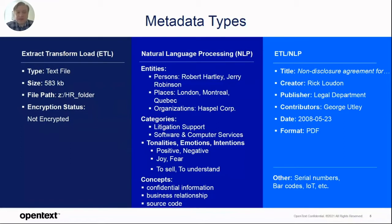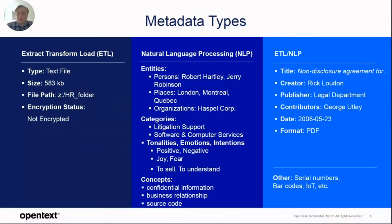Here we're talking about named entities such as persons, places, organizations, product names, drug names, and so on. Classifications — categories such as litigation support, software, or computer services — whatever classification applies to a document, whether it's a document type or a list of topics found within the document. Then we're talking about tonalities, emotions, intentions — which is more NLU.